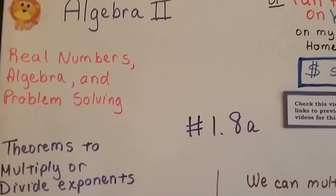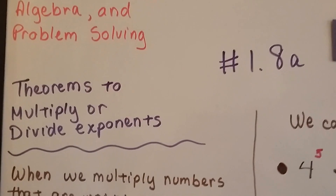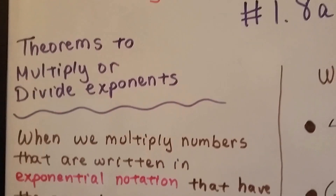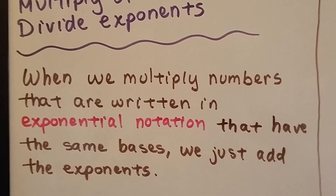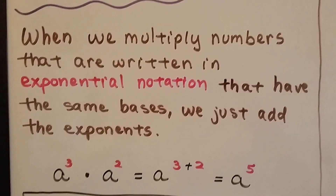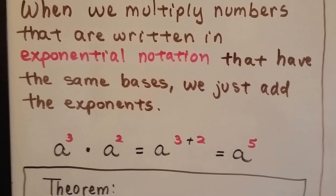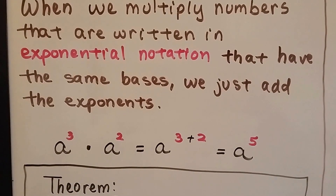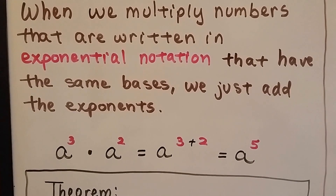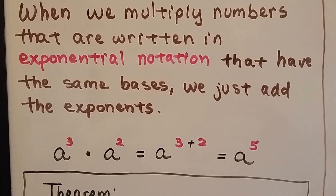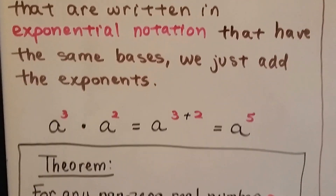Algebra 2, 1.8a: theorems to multiply or divide exponents. When we multiply numbers written in exponential notation that have the same bases, we just add the exponents. So a to the third power times a to the second power is just a to the three plus two — that's a to the fifth power.